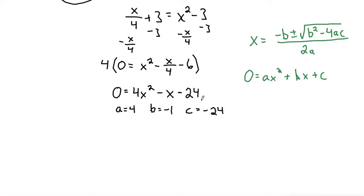So subbing that into our quadratic equation, we get x is equal to negative negative 1, that makes positive 1, plus or minus the square root of b squared, that would be negative 1 squared is positive 1, minus 4 times a, which is 4, times c, which is negative 24, all over 2 times a, which is 4.